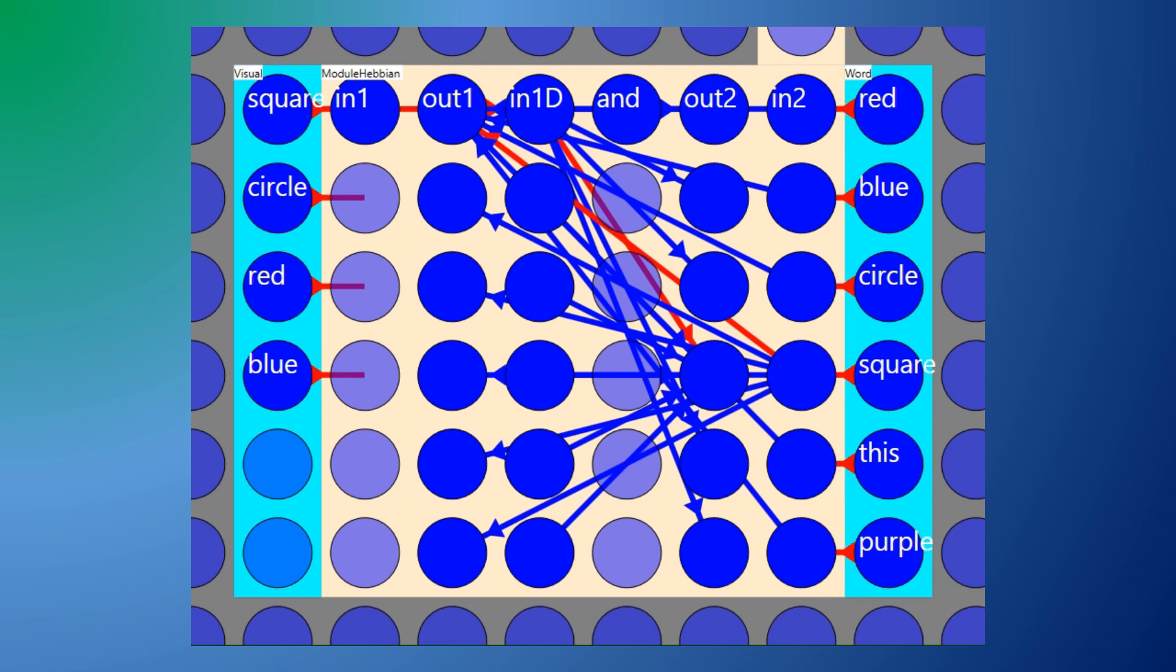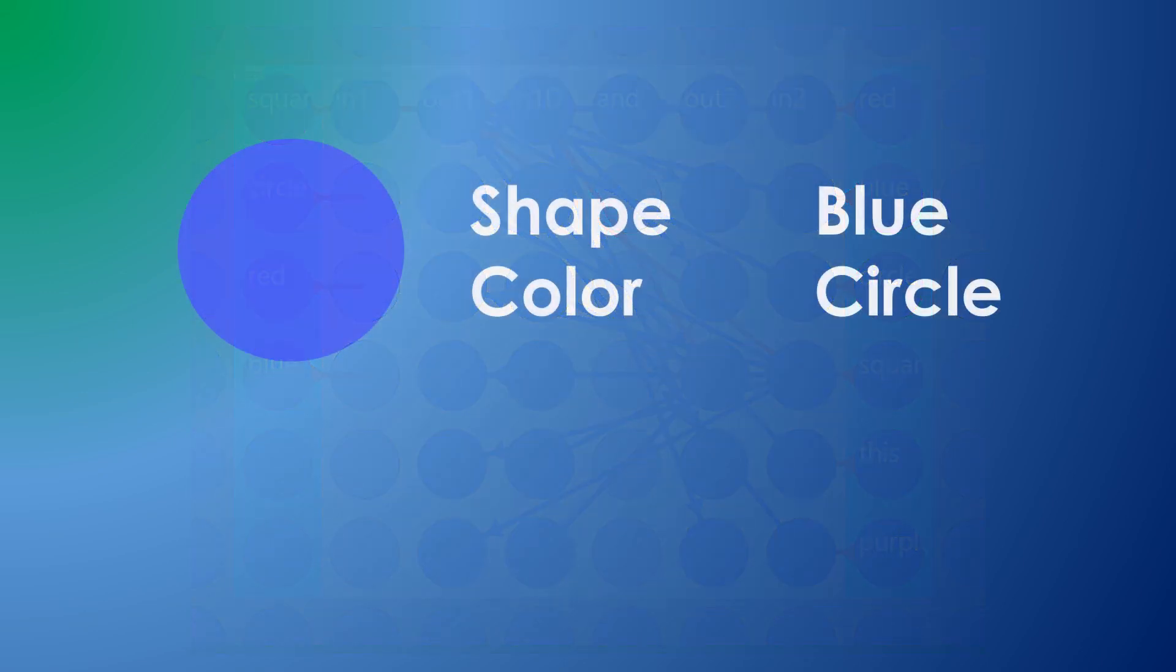Well what about ambiguous inputs? Suppose you see a blue circle and hear the words blue and circle. How do you know which word is associated with which attribute?